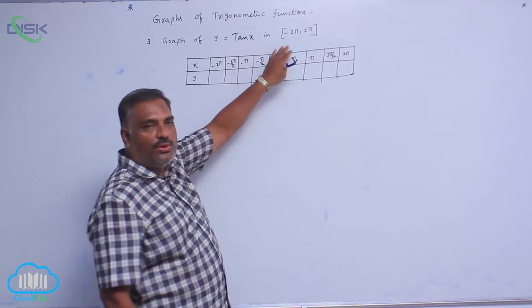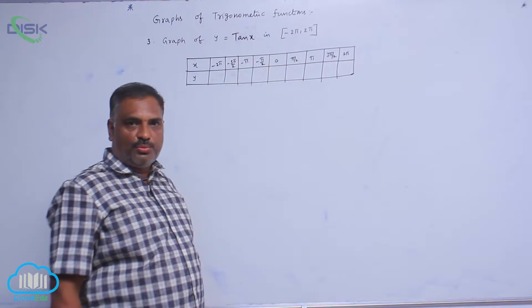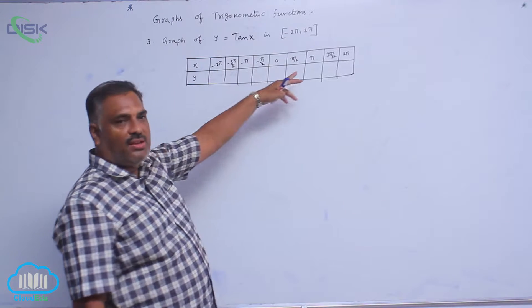We will discuss the graph of y equals tan x between minus 2π to 2π. As usual, we will find out all the values.